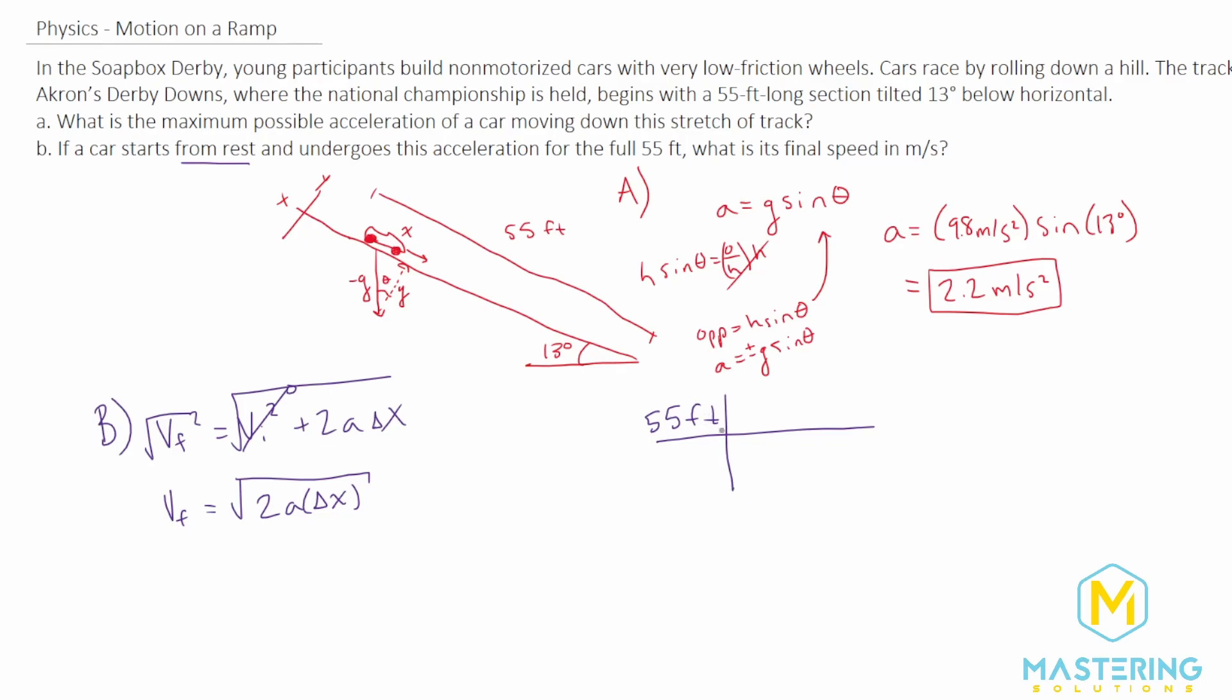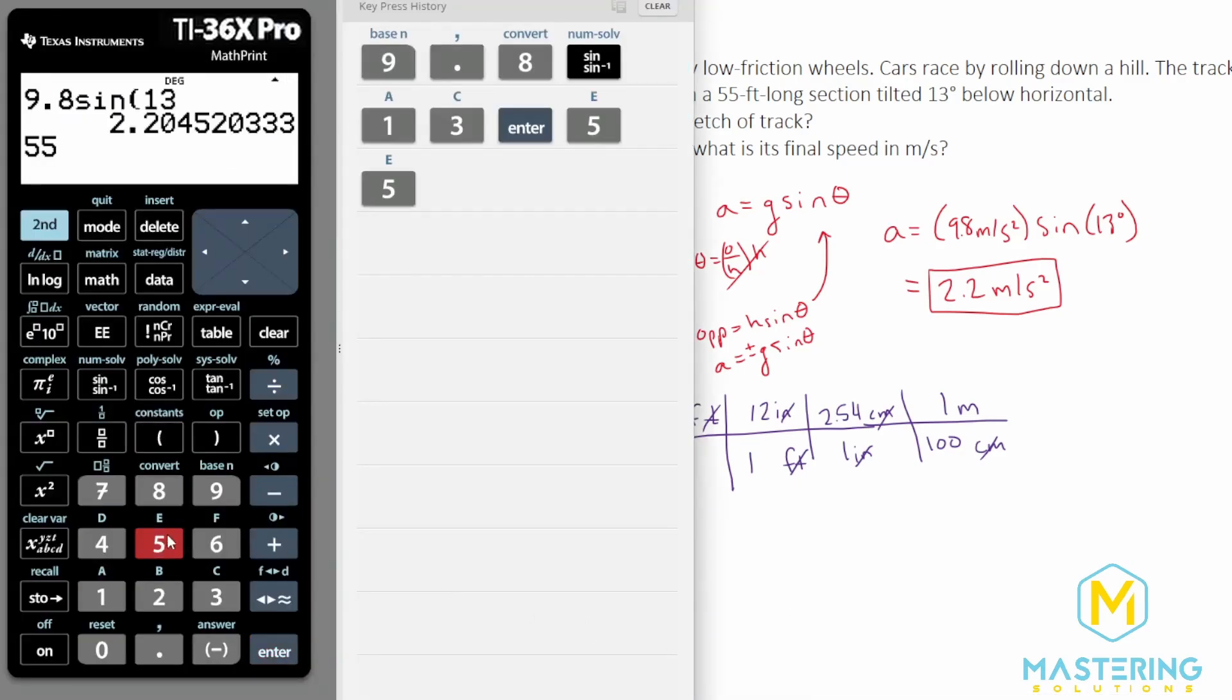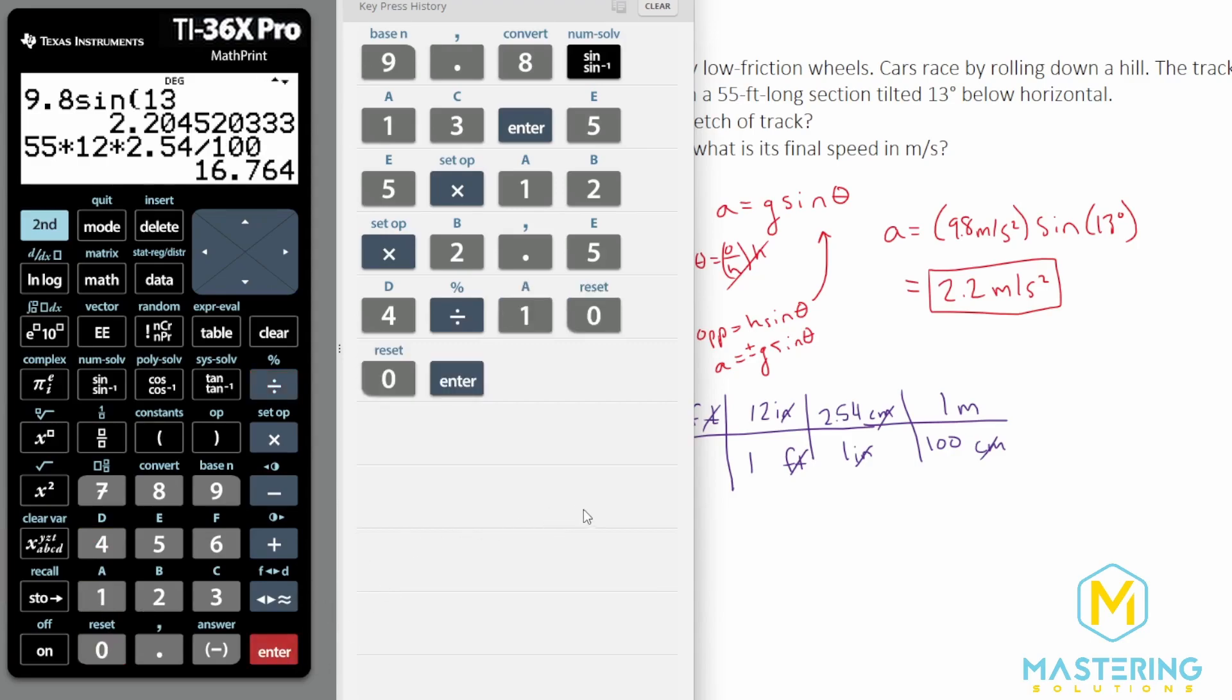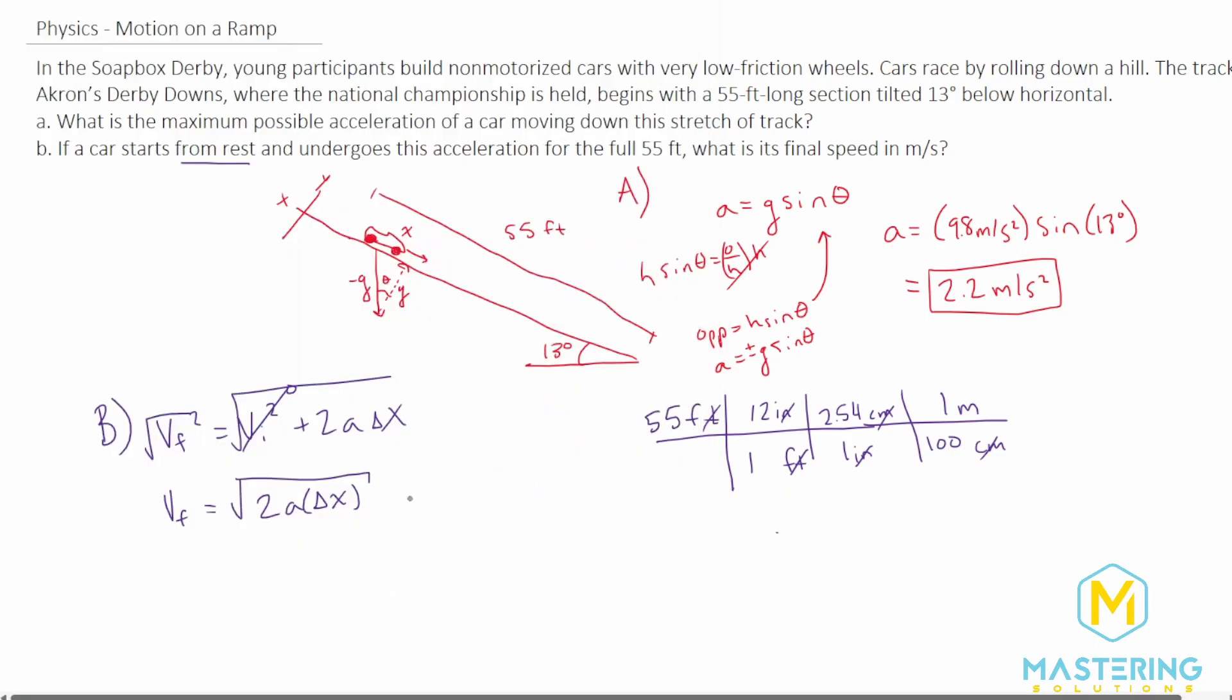We'll use dimensional analysis. We know we want the feet to cancel, so let's put feet down here. And in one foot there is 12 inches, so now the feet will cancel. Let's go from inches to centimeters, and in one inch there is 2.54 centimeters. Now inches are canceled, and in centimeters, for one meter there is 100 centimeters. So now we're in meters. If it's on the top you multiply, if it's on the bottom you divide. So we have 55 multiplied by 12 to put us in inches, multiplied by 2.54 to put us in centimeters, divided by 100 to put us finally in meters, so we have 16.8 meters. So the delta x will be 16.8 meters.